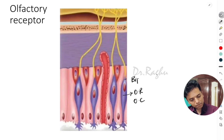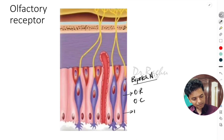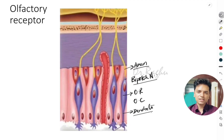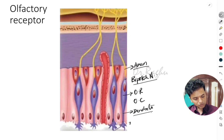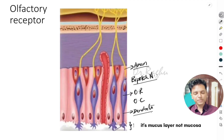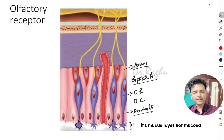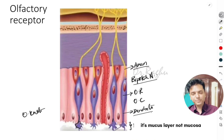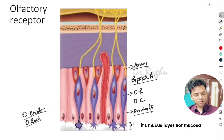This cell is nothing but a bipolar neuron. Since it's a bipolar neuron, on one side it has a dendrite and on the other side it has an axon. On the dendrite side we also have mucosa, and this dendrite shows an expanded end, which is called the olfactory knob or the olfactory rod.